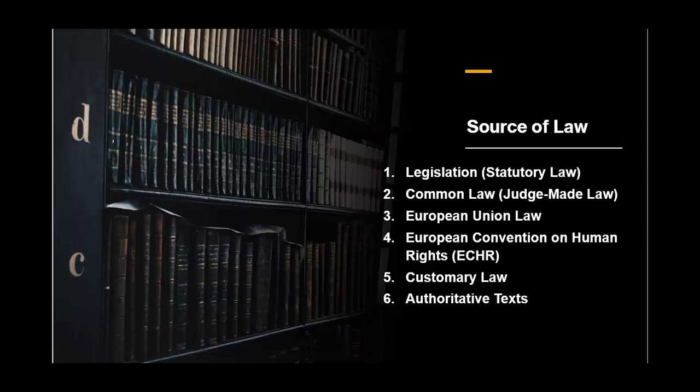Sources of law in the UK. Number one: Legislation — Statutory law. This is the law that's been formally passed by the UK Parliament and other devolved legislatures like the Scottish Parliament, the Welsh Parliament, and the Northern Ireland Assembly. For example, the Equality Act 2010 pulls together and updates various anti-discrimination laws in the UK, ensuring everyone is treated fairly regardless of their age, disability, gender, and other characteristics.